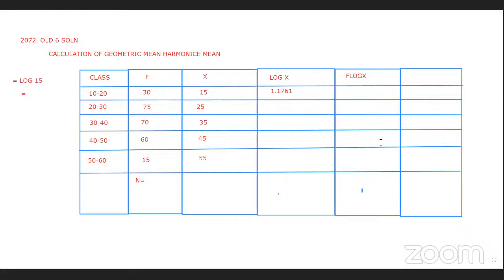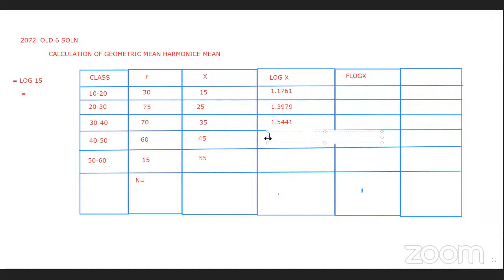Log x values: log 15 — you can see on the calculator. Log 25 is 1.3979. Log 35 is 1.5441. Log 45 is 1.6532. Log 55 is 1.7404.